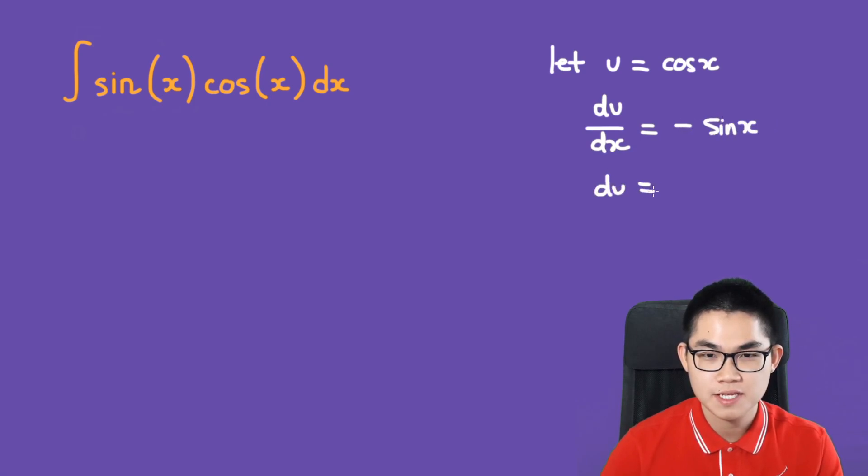So du is equal to negative sine of x dx. And dx is negative 1 over sine of x du.